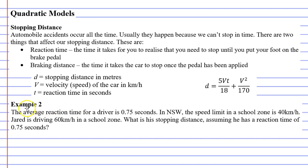When we read example 2, it says the average reaction time for a driver is 0.75 seconds. In New South Wales, the speed limit in a school zone is 40 kilometres an hour.